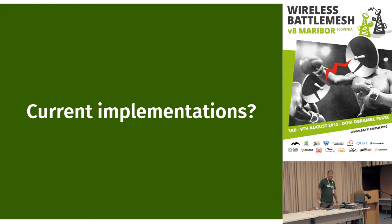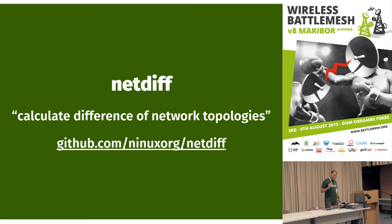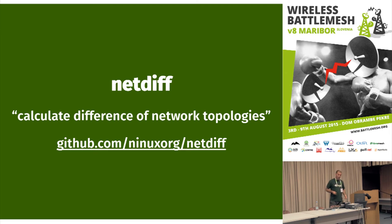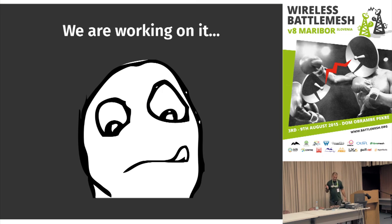We have a few experimental implementations. In the OLSR network framework — also known as OLSR2, thanks to Henning — you can query the protocol for information about routes and also the topology. There is netdiff, which is a small Python library we use to understand changes in the topology so we can update links in the database, decoupling the code that works with the database from the code that understands topology changes. We have parsers for OLSR, Batman Advanced, BMX6, CNML, and NetJSON itself. If you parse one of these formats, you can convert it to a NetJSON network graph. There is also a tool in NetEngine to output interface information in NetJSON.